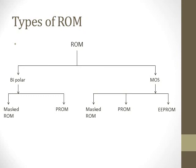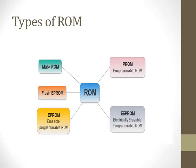These are the types of ROM. ROM is classified as Bipolar and MOS. Bipolar is further classified as Mask ROM and P-ROM. MOS is further classified as Mask ROM, P-ROM, and EEPROM. Another diagram also shows the types of ROM, where EPROM is additionally mentioned.